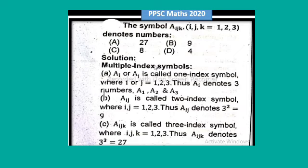A_i or A_j is called one-indexed symbol, where i or j equal to 1 to 3. Thus A_i denotes three numbers: A1, A2, and A3.